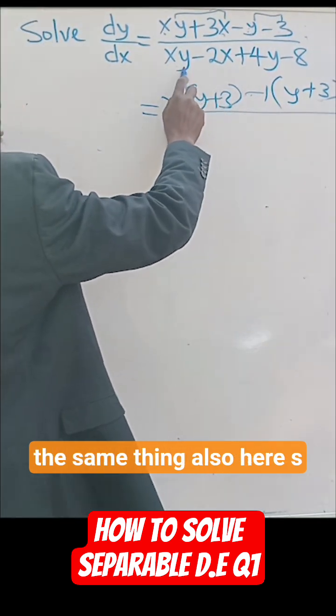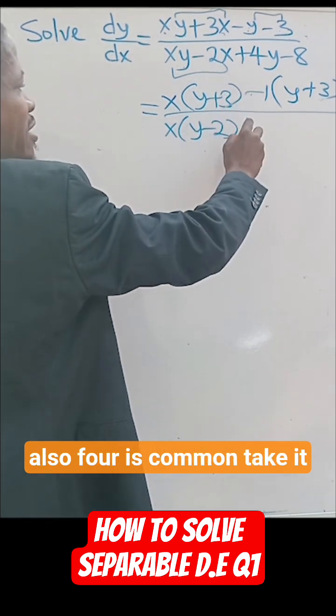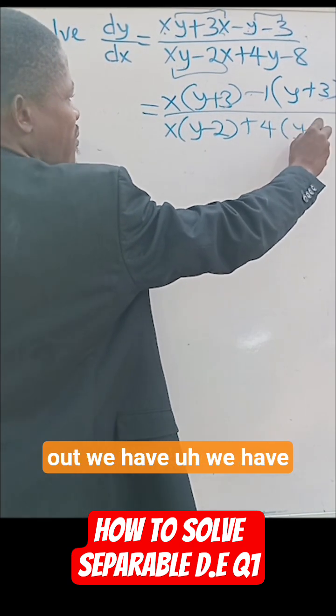All over, do the same thing also. Here, x is common, take it out. Here also, 4 is common, take it out, we have this.